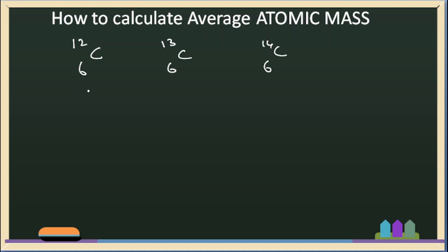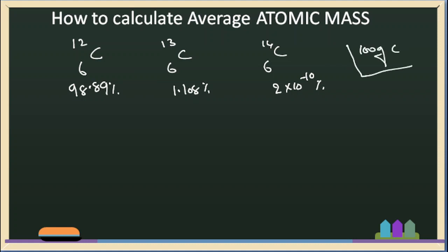And what is their relative abundance? C-12 has 98.89% abundance, and C-13 has 1.108% abundance. We will consider C-14 with an extremely small abundance of approximately 0.0000002% of C-14 isotopes.